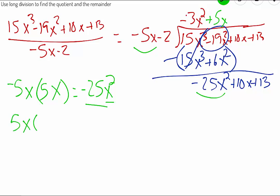Which means we're going to take 5x and multiply it by our divisor. When we do this, we get negative 25x squared minus 10x. Again, we are going to write that in over here so that we can subtract that.